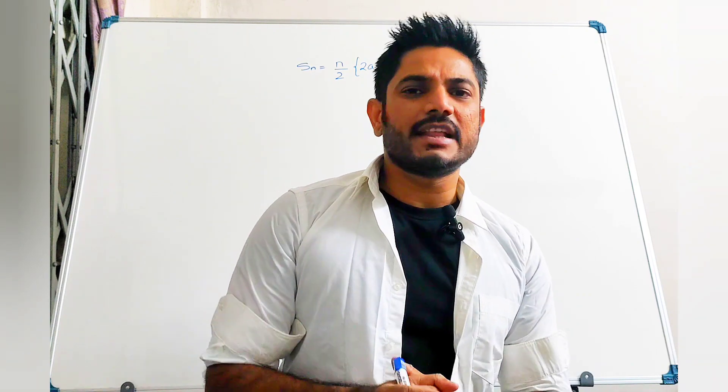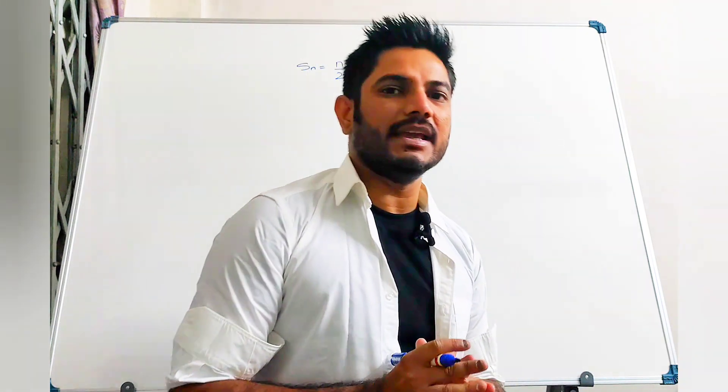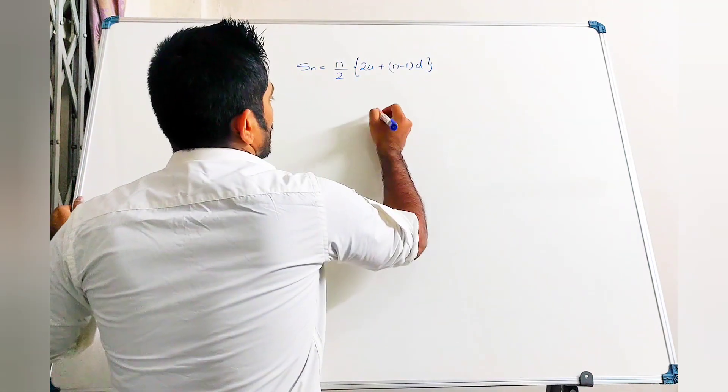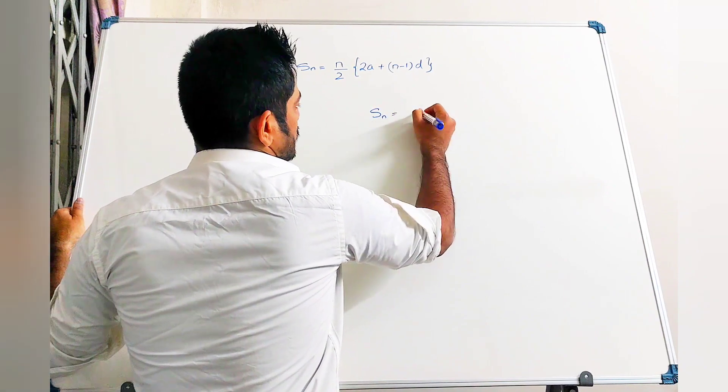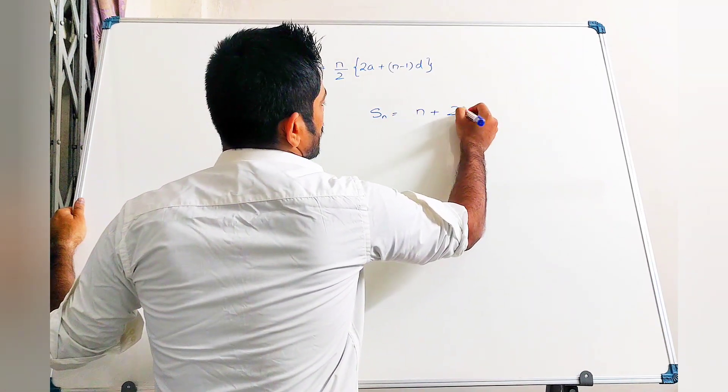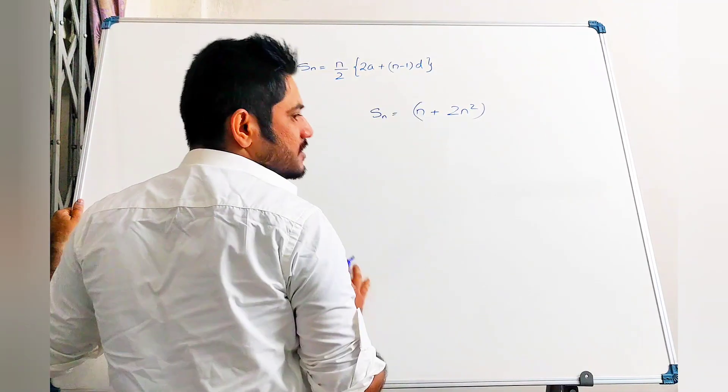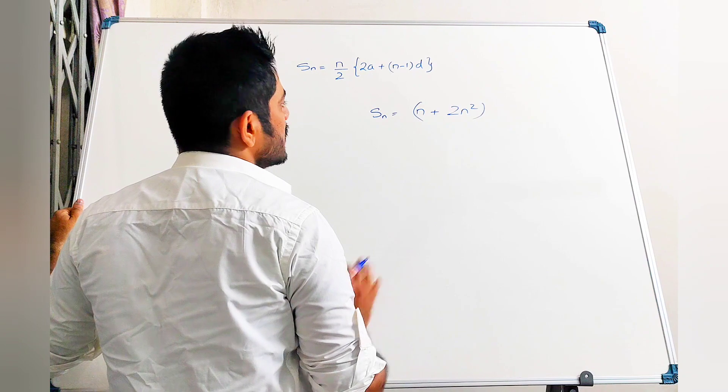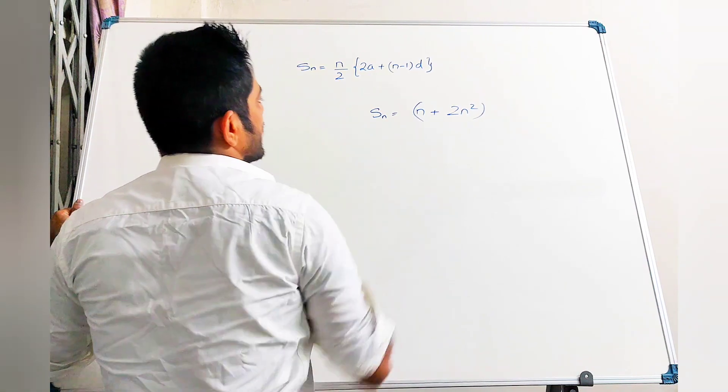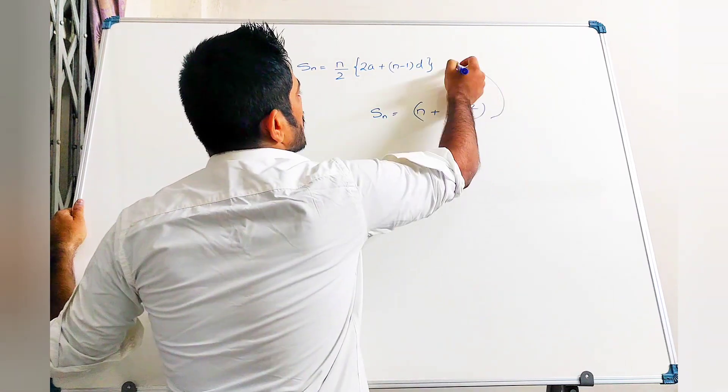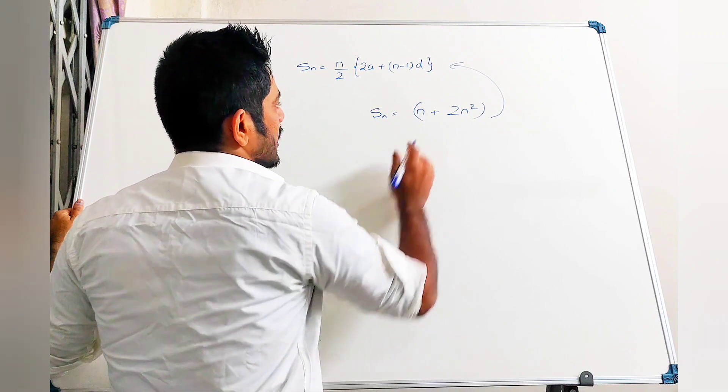Hello, so in this question it was given that the sum of first n terms of an AP is Sn equal to n plus 2n squared. I know that the standard formula for the sum of first n terms in an AP is given by this. I'll try to transform this into this equation. Let's see how to do that.